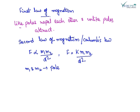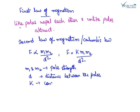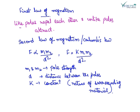Where M1 and M2 are the pole strengths, d is the distance between the poles, and K is a constant which depends on the nature of surrounding material. So this is Coulomb's law.